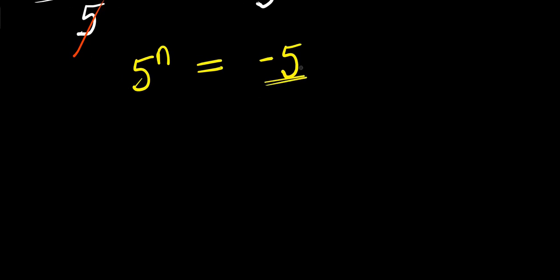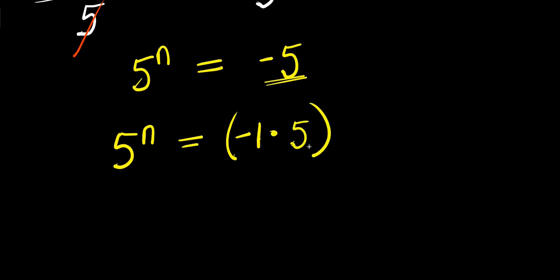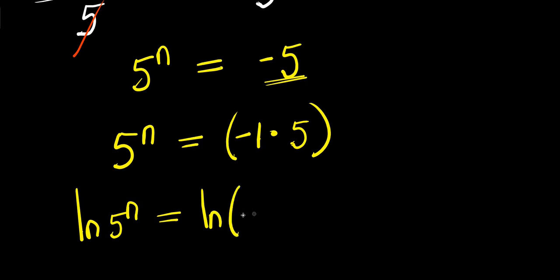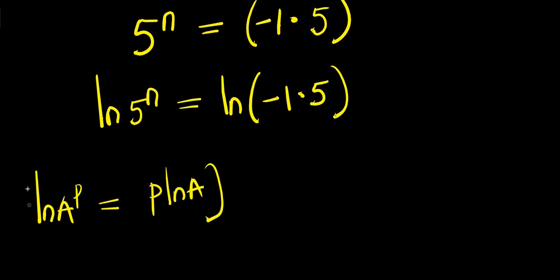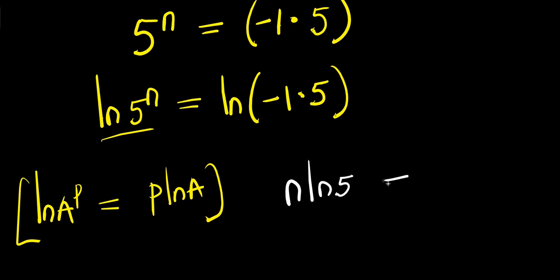From here I will simply express negative 5 as negative 1 times 5, so I have 5 power n equals negative 1 times 5, which equals negative 5. Now I will apply the natural log: natural log of 5 power n equals natural log of negative 1 times 5.